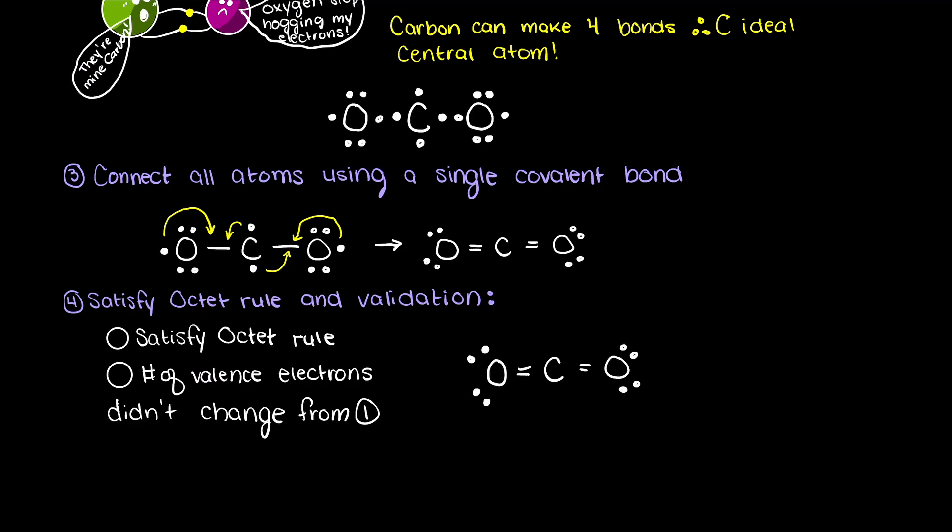Now, let's ensure that we are not violating our octet rule, or added or removed any valence electrons, since we still should have the same number that we began with, which was 16 valence electrons. So, let's first count the number of valence electrons in our system to make sure that we still have 16 valence electrons.